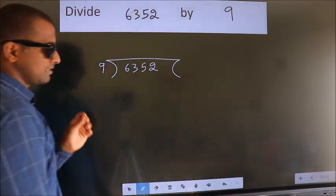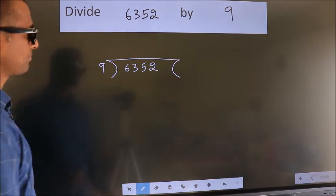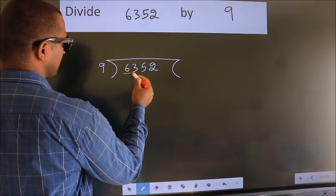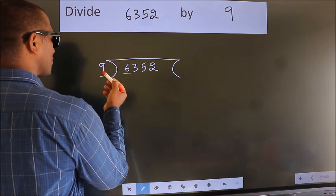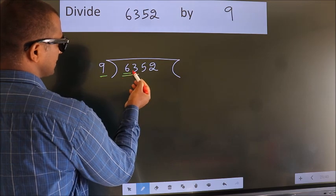This is your step 1. Next, here we have 6, here 9. 6 is smaller than 9, so we should take two numbers: 63.